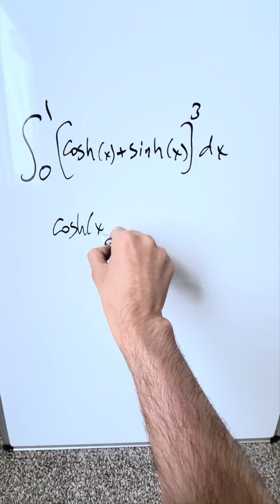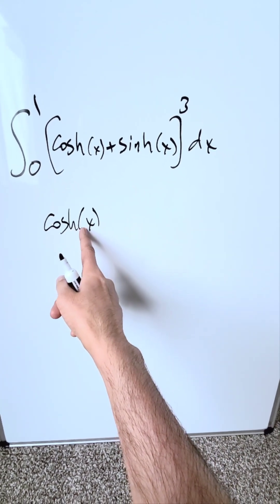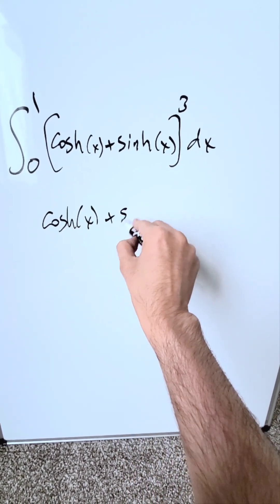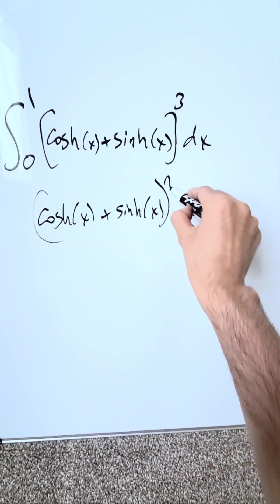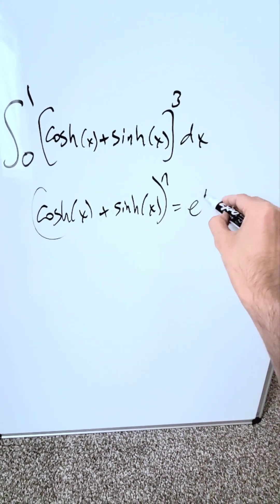If you have anything which looks like hyperbolic cosine x plus hyperbolic sine x, you can even have a coefficient with dx—it wouldn't impact the identity in any way. This is what we have, all to the power of n. This is always equal to e to the power of nx.